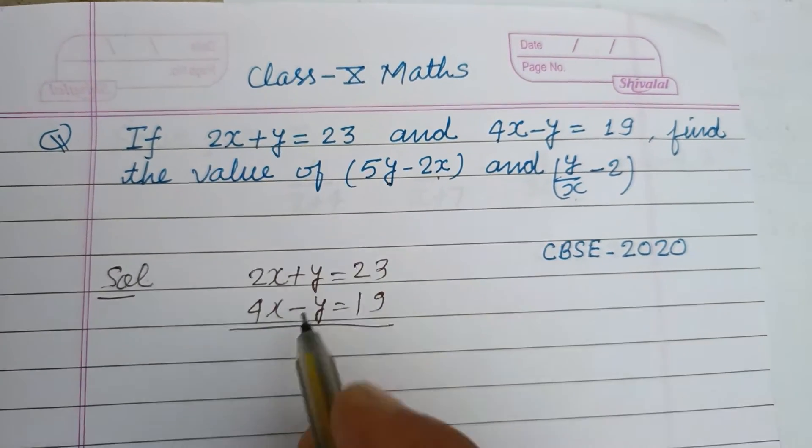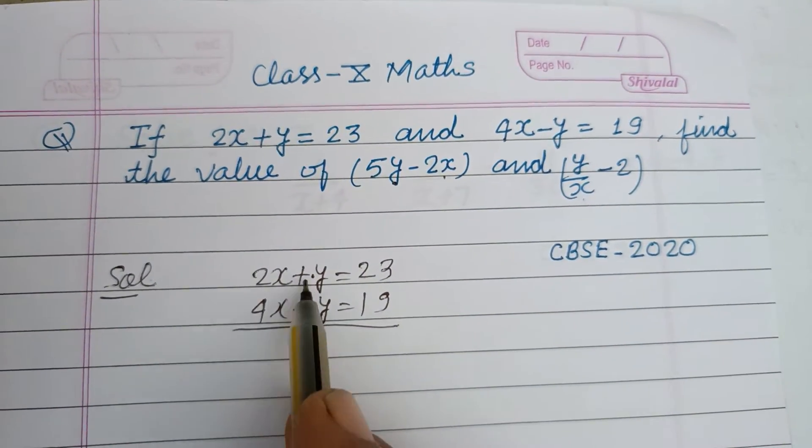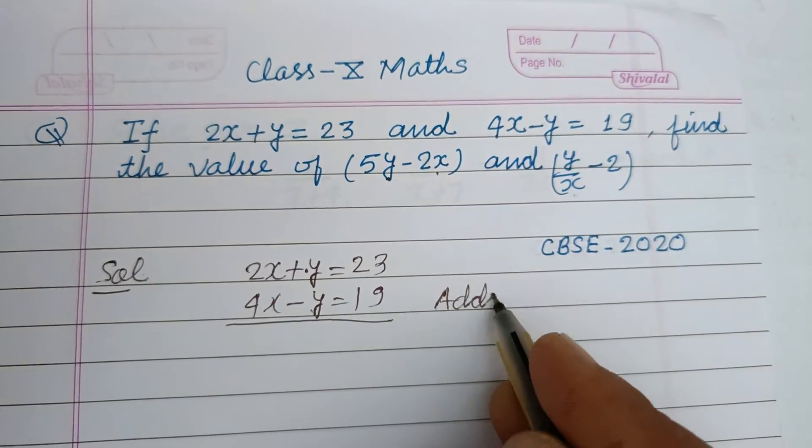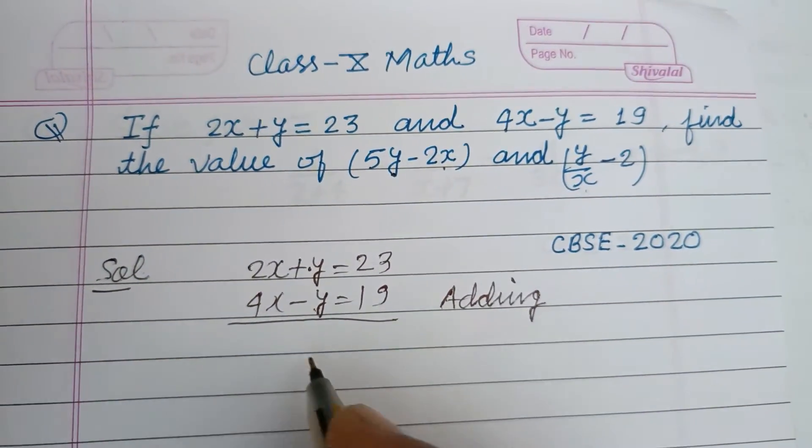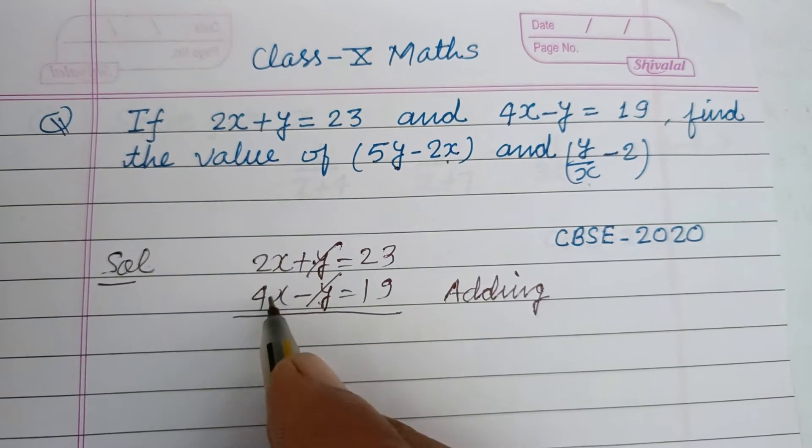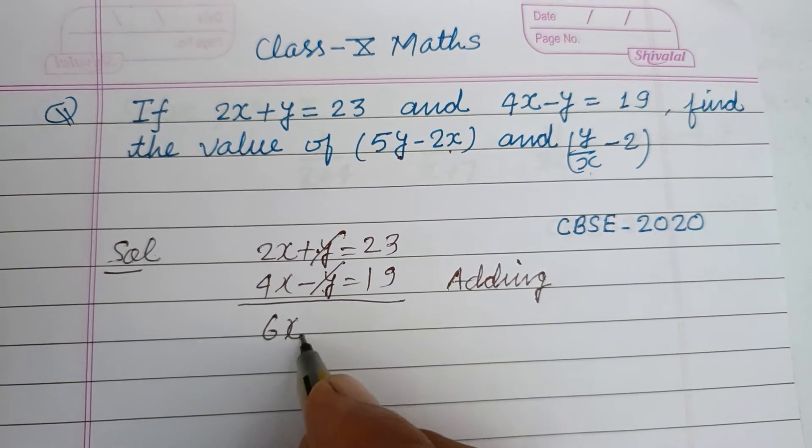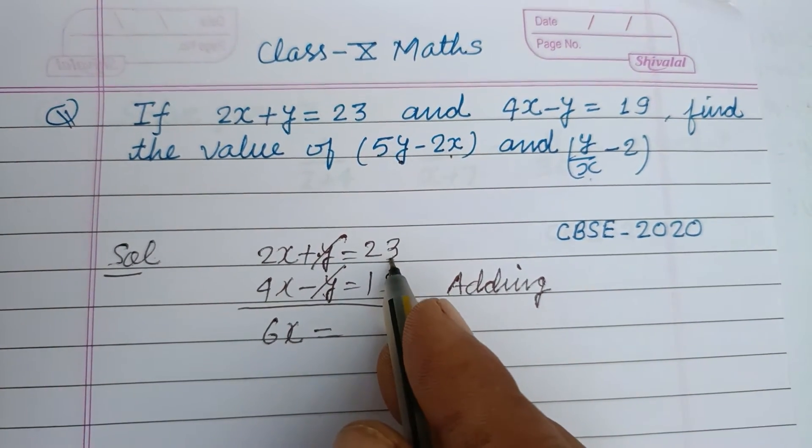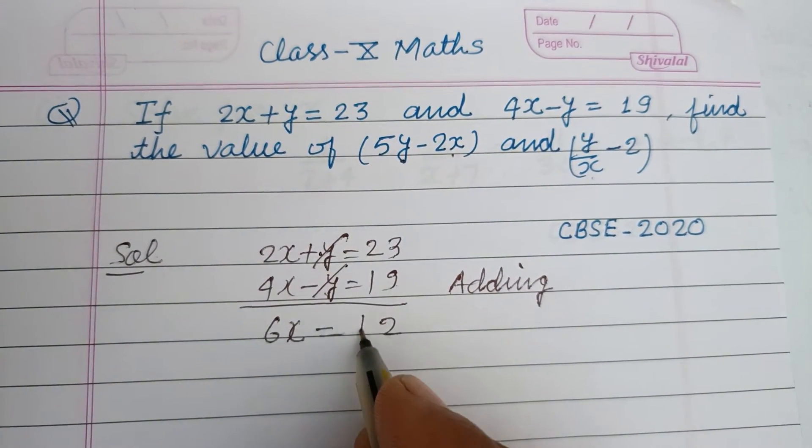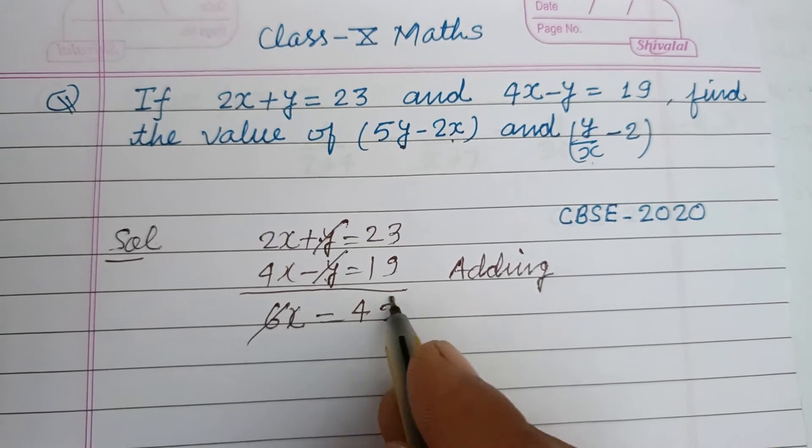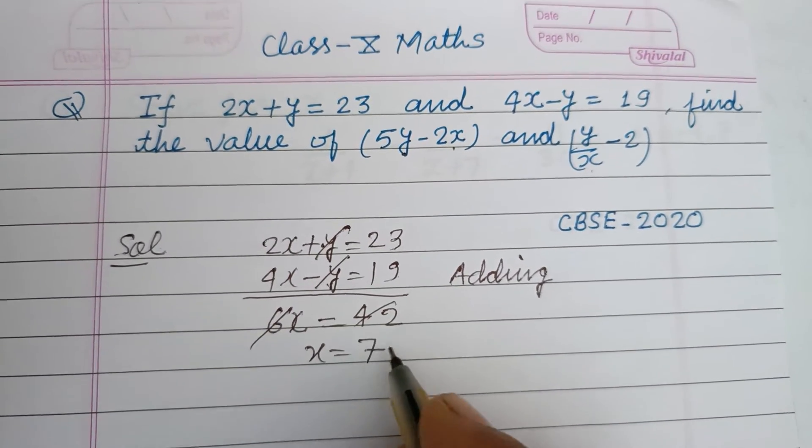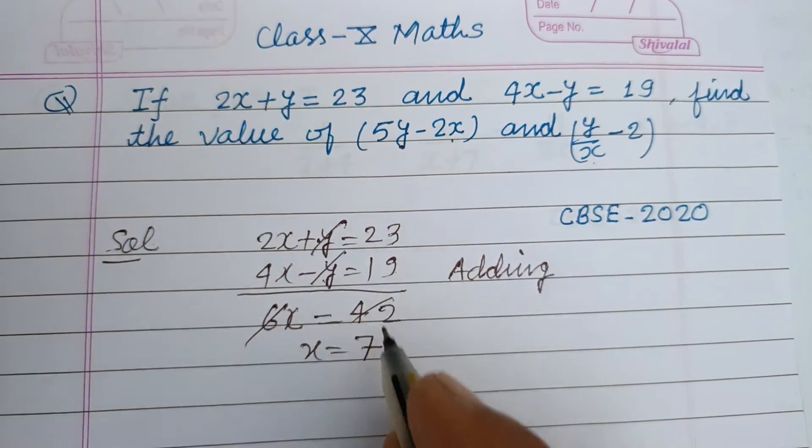Since y has opposite signs, we add the equations. On adding, y and -y cancel. 4x + 2x gives 6x, and 23 + 19 = 42. So 6x = 42, therefore x = 7.